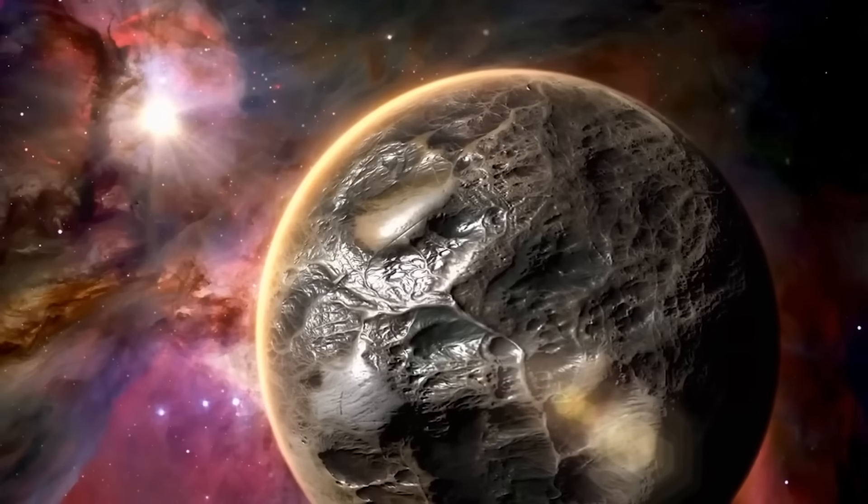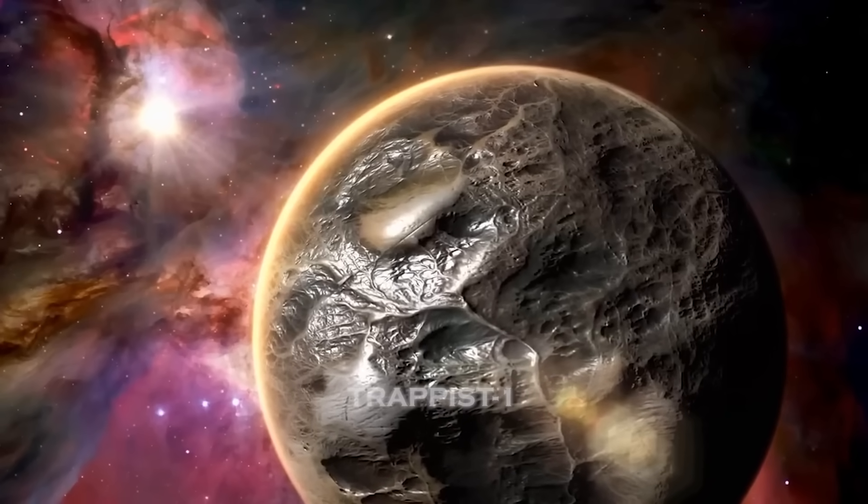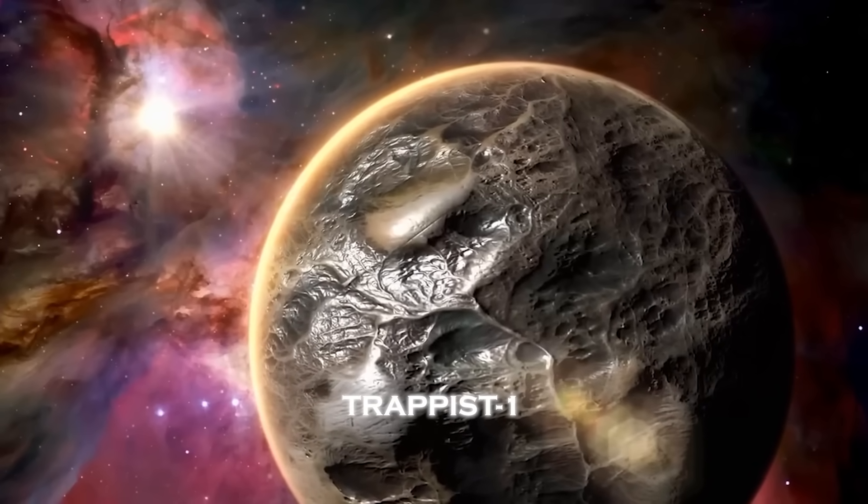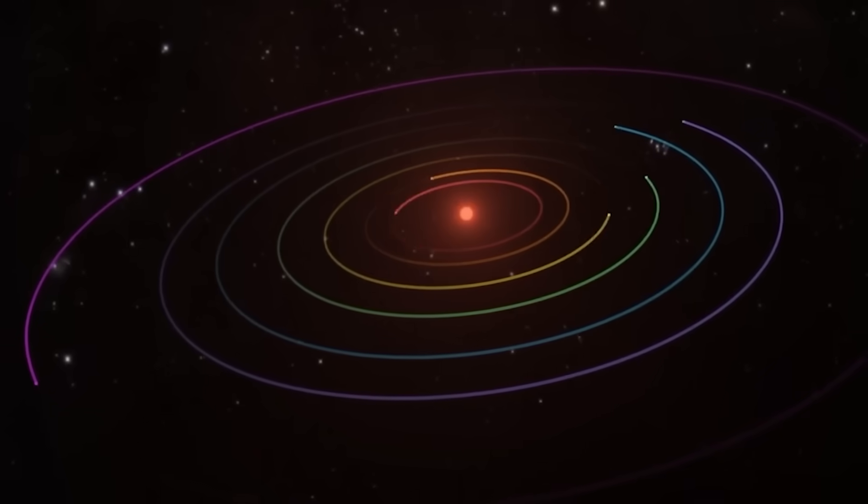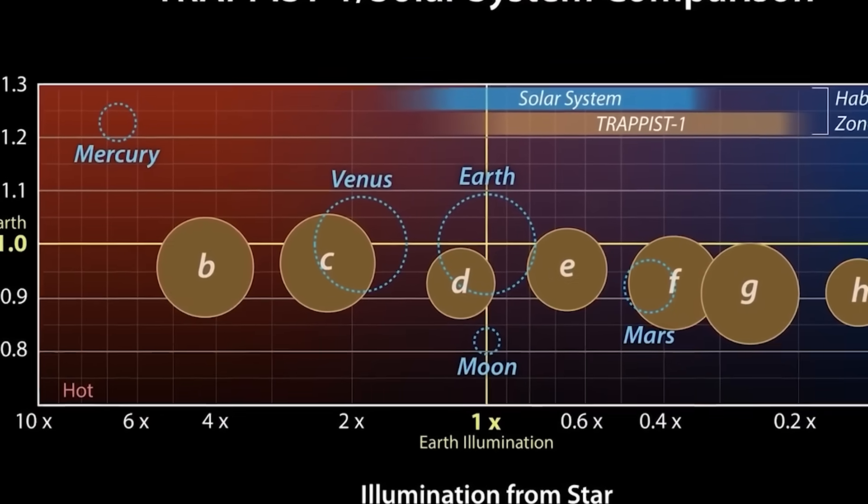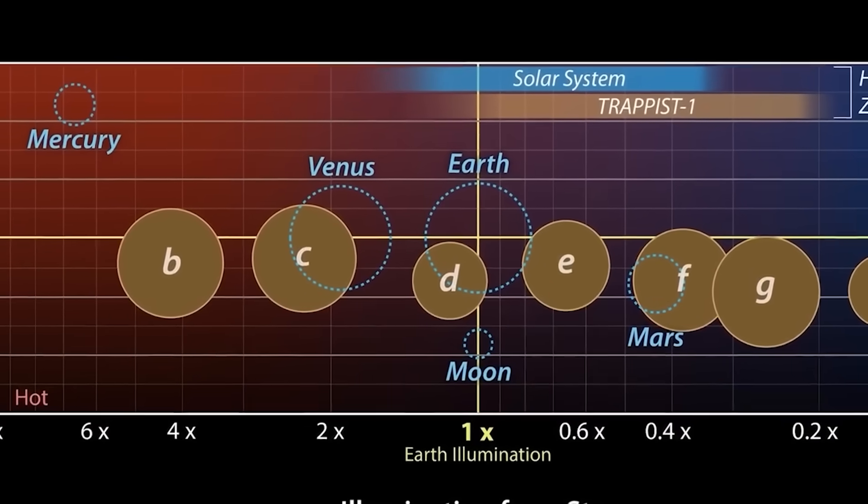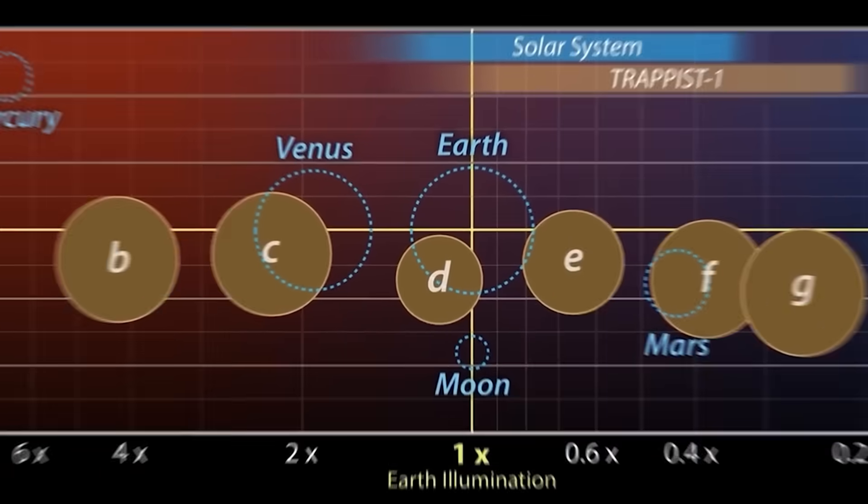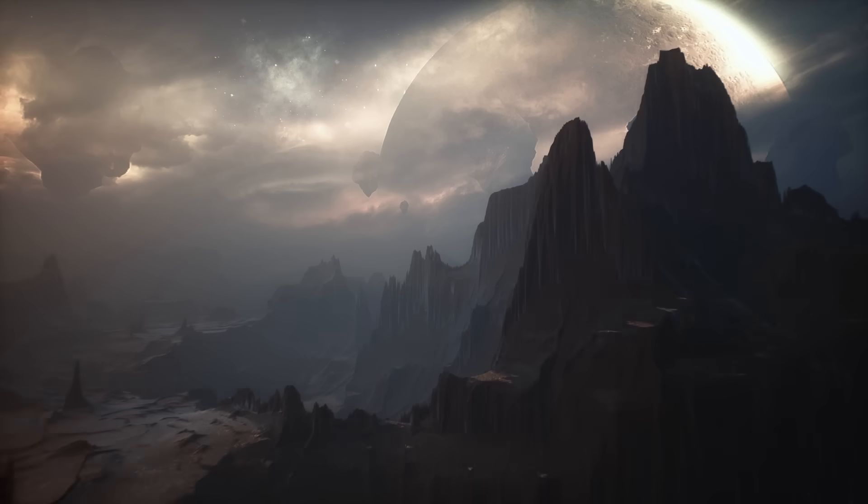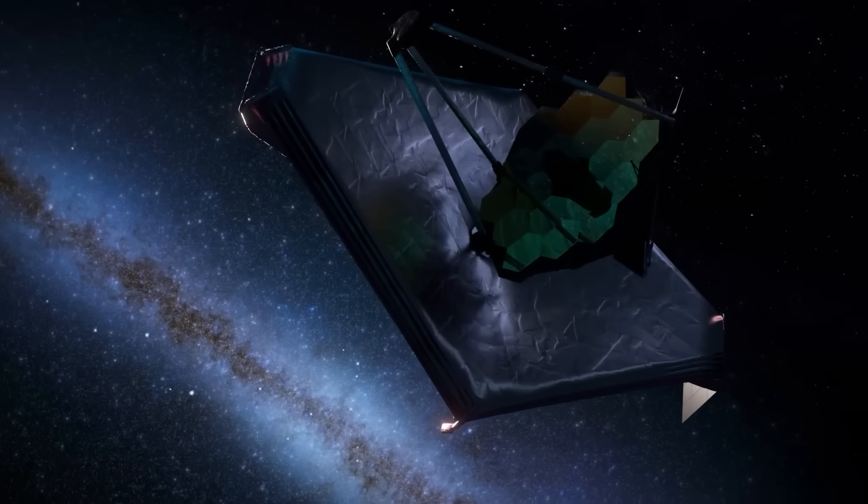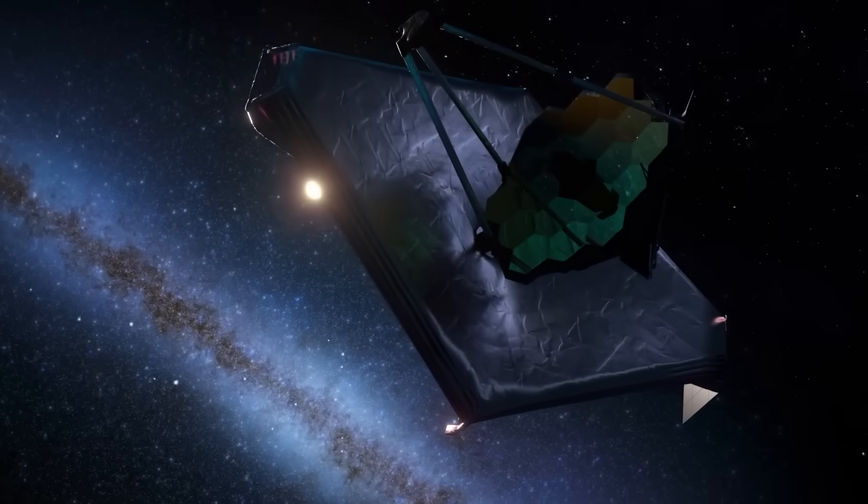If Enceladus has become the new frontier for hope, TRAPPIST-1 has become the cautionary tale. When this star system was discovered, with seven rocky planets similar in size to Earth, three of them in the so-called habitable zone, it sparked dreams of a mini solar system teeming with life. Scientists imagined worlds with oceans, clouds, and alien skies.